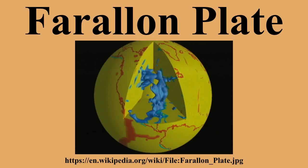The Farallon Plate was an ancient oceanic plate that began subducting under the west coast of the North American Plate, then located in modern Utah, as Pangaea broke apart during the Jurassic period. It is named for the Farallon Islands, which are located just west of San Francisco, California. Over time, the central part of the Farallon Plate was completely subducted under the southwestern part of the North American Plate.